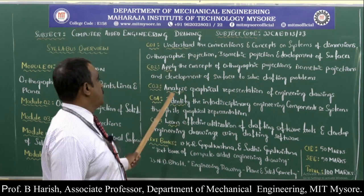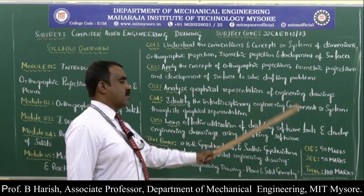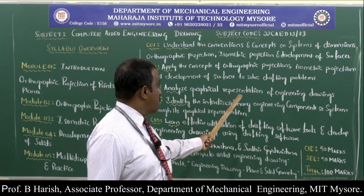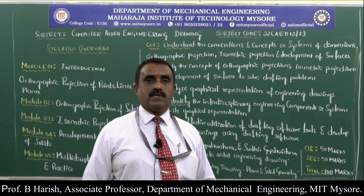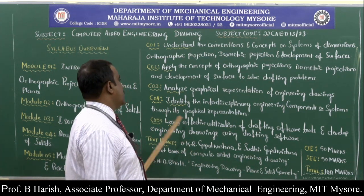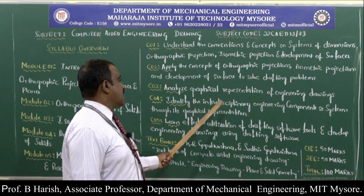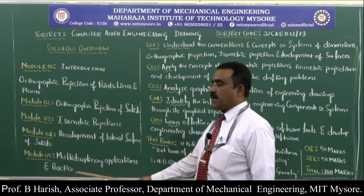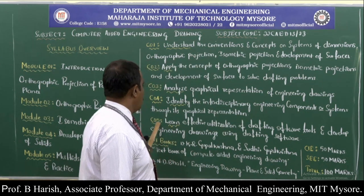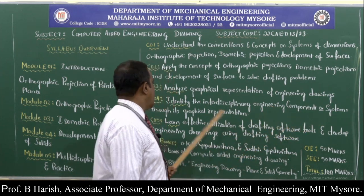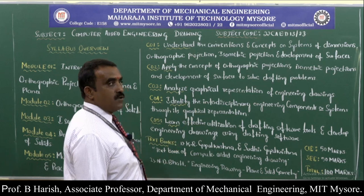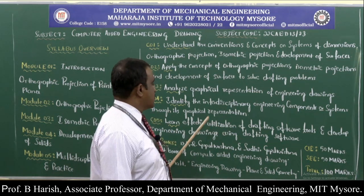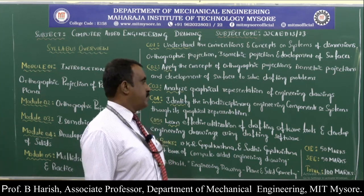The third CO says: analyze graphical representation of engineering drawing — once the drawing is done, how to analyze and represent the engineering drawing. The fourth CO says: identify the interdisciplinary engineering components or systems through their graphical representation. This CO relates to the fifth module — multidisciplinary applications and practices.